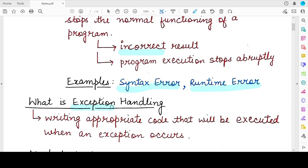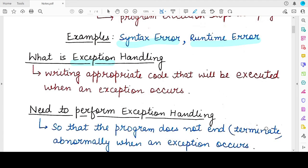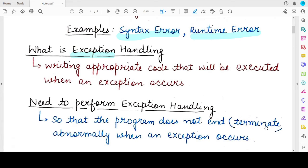So whenever an exception occurs, if you have written the correct exception handling code, that particular code generally known as exception handler will be executed and your program will not terminate suddenly. It will not abruptly stop without giving you appropriate information.